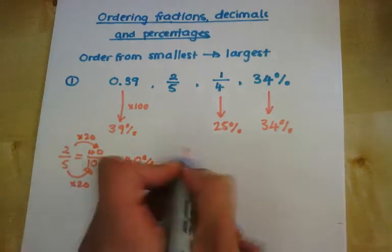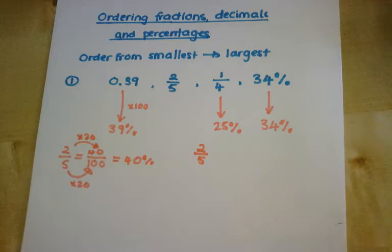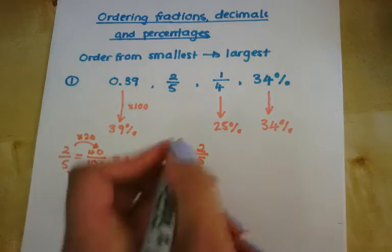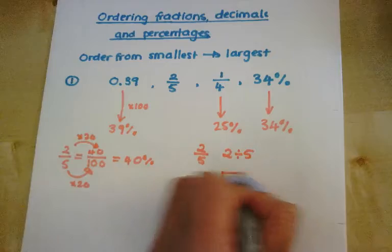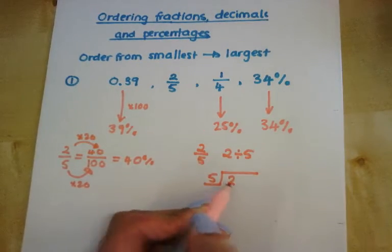Another way to change a fraction into a decimal, and then eventually a percentage, is to do a division. So I'm going to do 2 divided by 5, but I'm going to put it in the bus stop method. 2 divided by 5. Make sure you do put the 2 inside there.